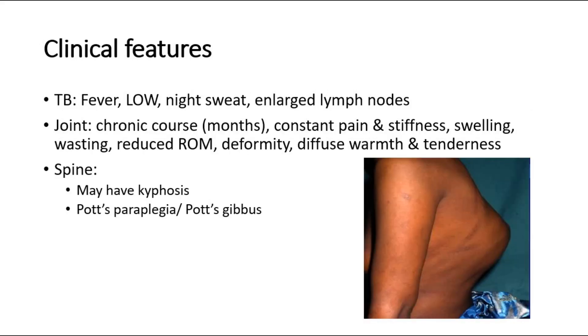For clinical features, there are systemic TB symptoms such as fever, especially prolonged fever, loss of weight, night sweats, and also enlarged lymph nodes.